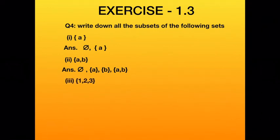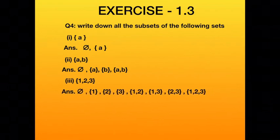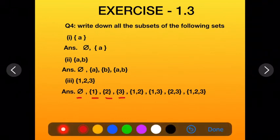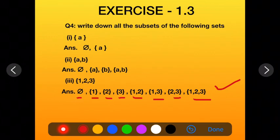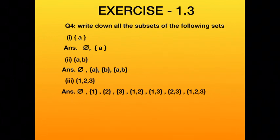Third part: set {1, 2, 3} — it has 3 elements, so number of subsets = 2³ = 8. The subsets are: ∅, {1}, {2}, {3}, {1,2}, {1,3}, {2,3}, and {1,2,3}. You can verify that all elements of each subset are present in the original set. Counting them gives exactly 8 subsets.